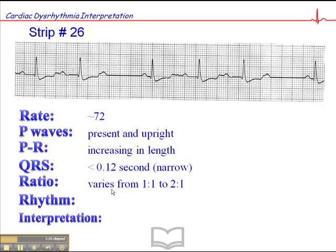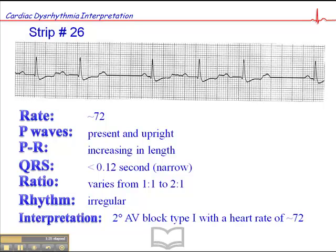That's also consistent with a specific dysrhythmia, and the rhythm is irregular. So if you haven't already figured it out, when we have an increasing PR interval length where there are dropped beats, and sometimes we have a 2 to 1 ratio, and the rhythm is irregular, this is a 2nd degree AV block type 1, also known as Wenckebach, with a heart rate of approximately 72 beats per minute.